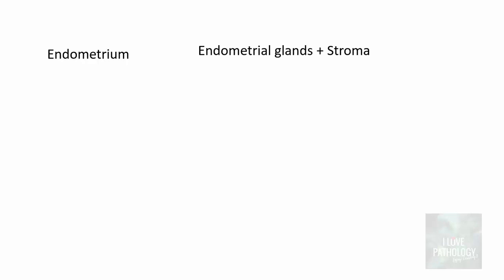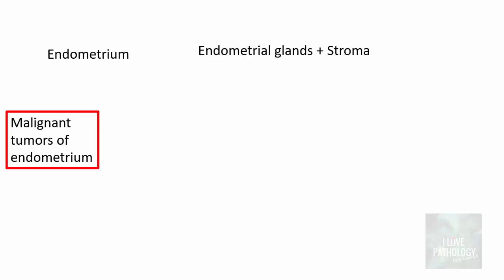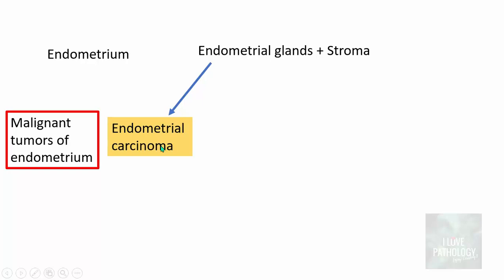Before we start knowing about endometrial cancer, let us see what endometrium is. Endometrium, as you all know, is the lining of the uterus, comprised of endometrial glands and the specialized stroma. Coming to the endometrial tumors, the malignant tumors of endometrium can be of different types. One type can arise from the endometrial glands itself and that is called endometrial carcinoma — the malignancy which arises from the endometrial glands.